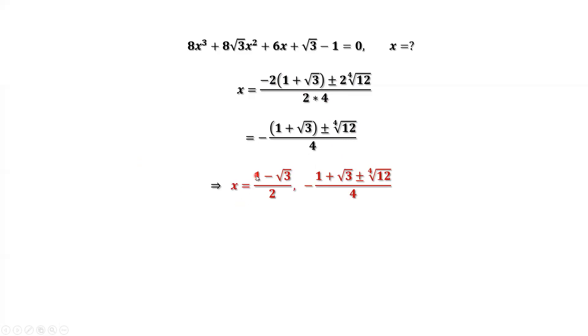x equals 1 minus square root of 3 divided by 2. x equals negative 1 plus square root of 3 plus minus the fourth root of 12 divided by 4.